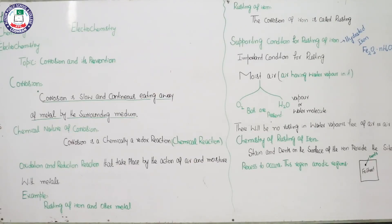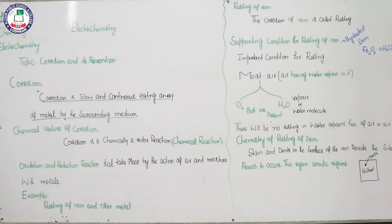What does corrosion mean? We know that it is related to metals. If we talk about corrosion in metals, then we think about iron. In simple words, we can say it is the rusting of iron. The corrosion is a slow and continuous eating away of metals by surrounding mediums. Slow means it is a gradual process, and continuous means it is always eating away — the process will not stop until the piece of iron is completely finished.